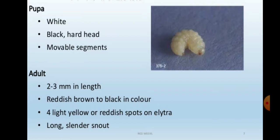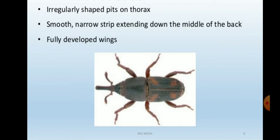The adult stage is the most important part. Adults are called beetles. The adult is 2 to 3 mm in length, reddish brown to black in color, with four light yellowish-reddish spots on the elytra. It has a long cylindrical snout. The body is divided into head, thorax, and abdomen. There are irregular-shaped pits on the thorax. This is also a destructive stage.